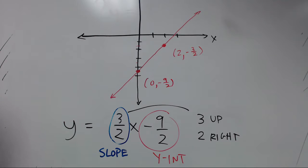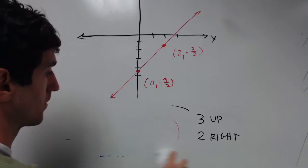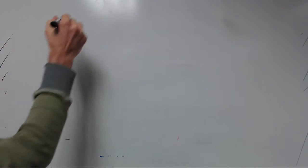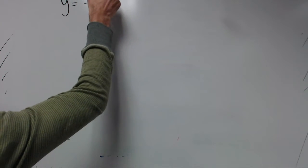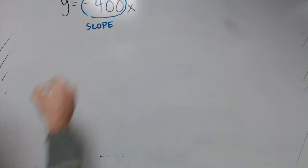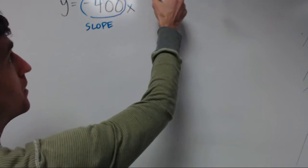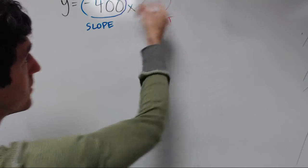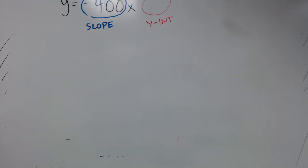We've got one more example. The other example is y equals negative 400x. And this one is already in slope intercept form. And the slope is the negative 400. And the y-intercept is 0. You could write plus 0 there if you want. You don't have that constant term. It's just a y-intercept of 0.